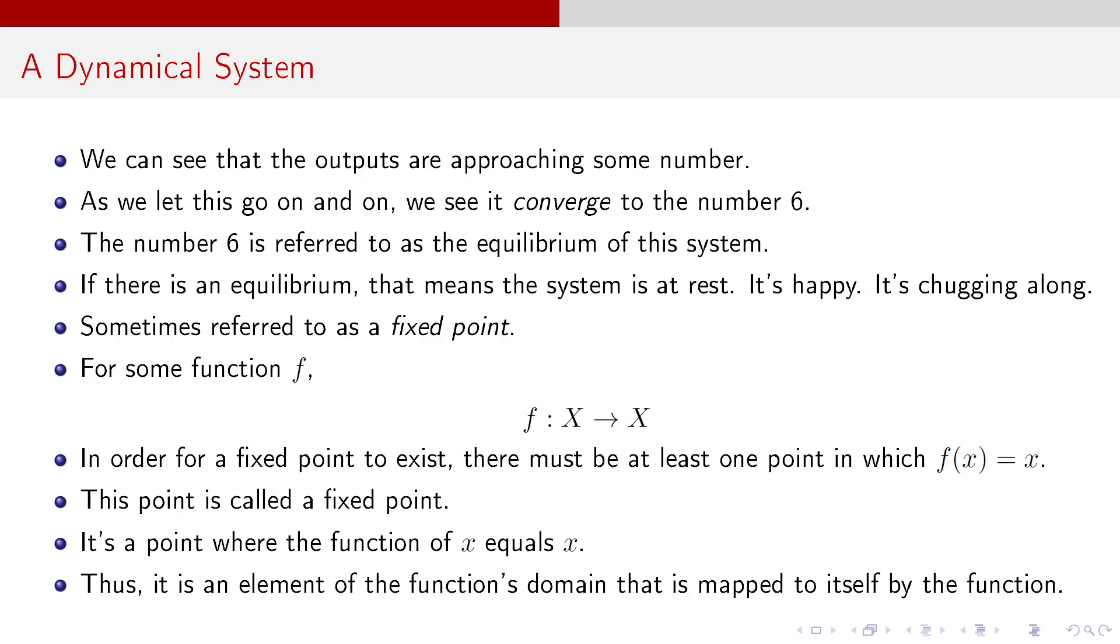Sometimes it's referred to as a fixed point. Other times, it's referred to as a steady state. If you hear an equilibrium in a dynamic context, it's a fixed point or a steady state. For some function f that has X mapping into itself, in order for a fixed point to exist, there has to be at least one point in which f(x) is equal to x, and that is called the fixed point. It's the point where the function of x equals x. The input equals the output. So, the element of the function's domain that is mapped to itself by the function.